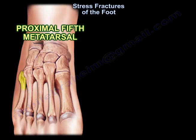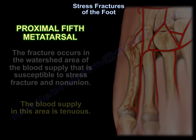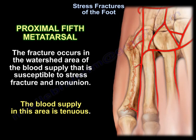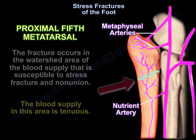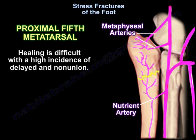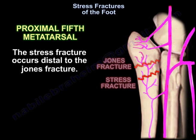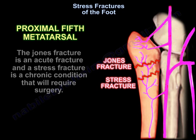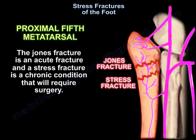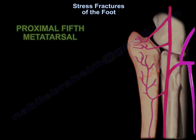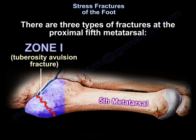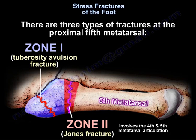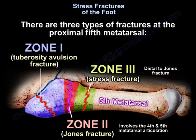Proximal fifth metatarsal fractures occur in the watershed area of the blood supply, which is susceptible to stress fracture and non-union. The blood supply in this area is tenuous, making healing difficult with a high incidence of delayed union and non-union. The stress fracture occurs distal to the Jones fracture. The Jones fracture is an acute fracture, while the stress fracture is a chronic condition requiring surgery. There are three types: zone one is a tuberosity avulsion fracture; zone two is the Jones fracture involving the fourth and fifth metatarsal articulation; zone three is the stress fracture distal to the Jones fracture.